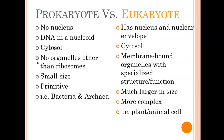Differences between prokaryotes and eukaryotes — you had a slide that looks just like this. It's important to know that prokaryotes have no nucleus and no membrane-bound organelles. They do have ribosomes, though. Eukaryotes also have ribosomes, so they have that in common. They both have a cell membrane. Prokaryotes have a cell wall; some eukaryotes have a cell wall, not all of them.